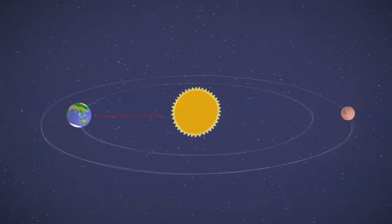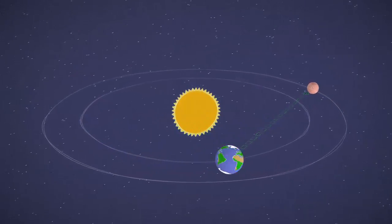Solar conjunction lasts just a few weeks. Then it's back to the grindstone, on Earth and on Mars.